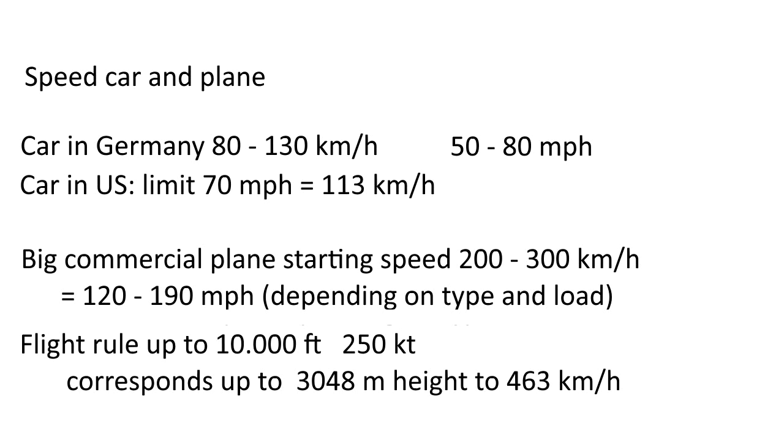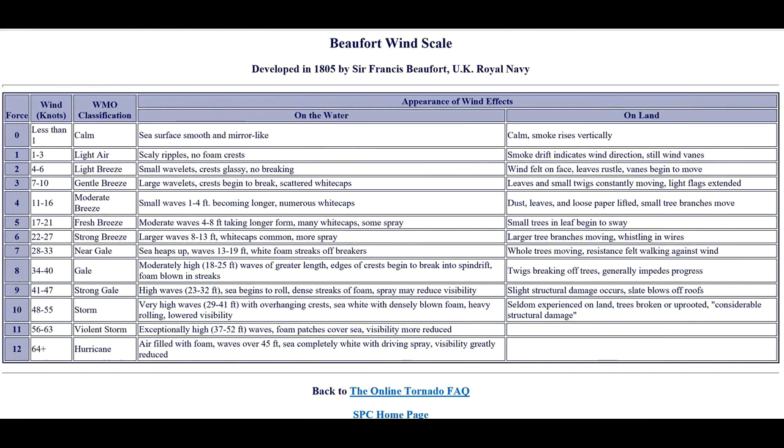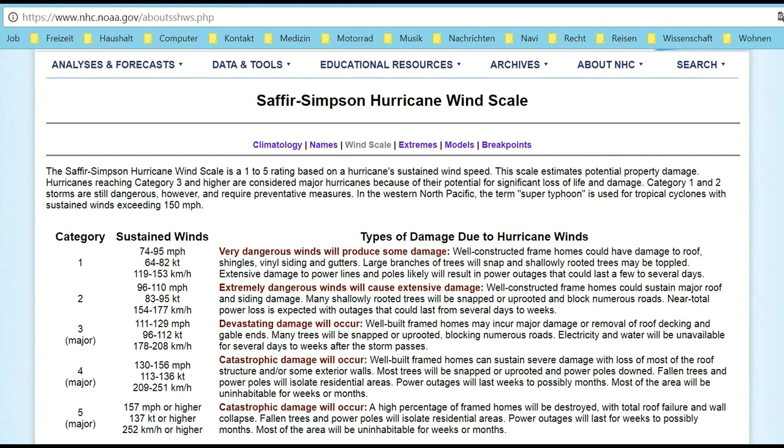I assume that it has a similar speed when approaching. A headwind with 200 to 300 kilometers an hour, respectively 120 to 180 miles per hour, would correspond to a wind force 17, or a hurricane category 4 to 5. Here, a big plane would have completely different problems than just to stand in the air. The headwind theory, therefore, does not fit with a large commercial aircraft.